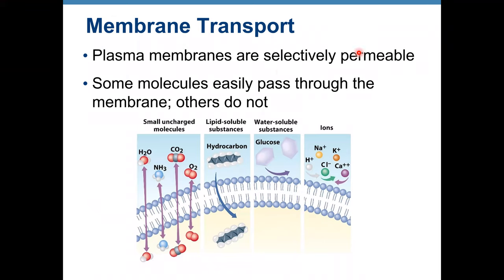Plasma membranes are selectively permeable, meaning that some molecules can move through and others can't. You can see the cell membrane — the phospholipid bilayer. Small uncharged molecules such as water, ammonia, carbon dioxide, and oxygen just move through the membrane. Some lipid-soluble substances also can move through, but most molecules are water-soluble and cannot pass directly through. Ions cannot do it either. That's why we call it selectively permeable.